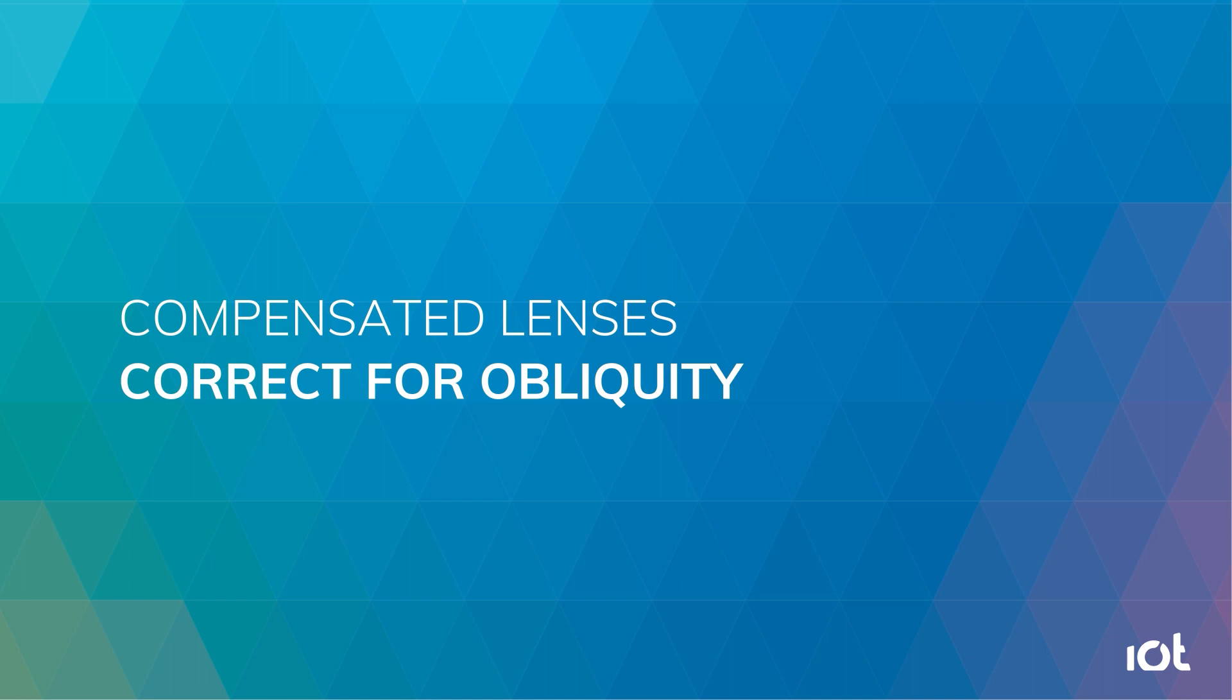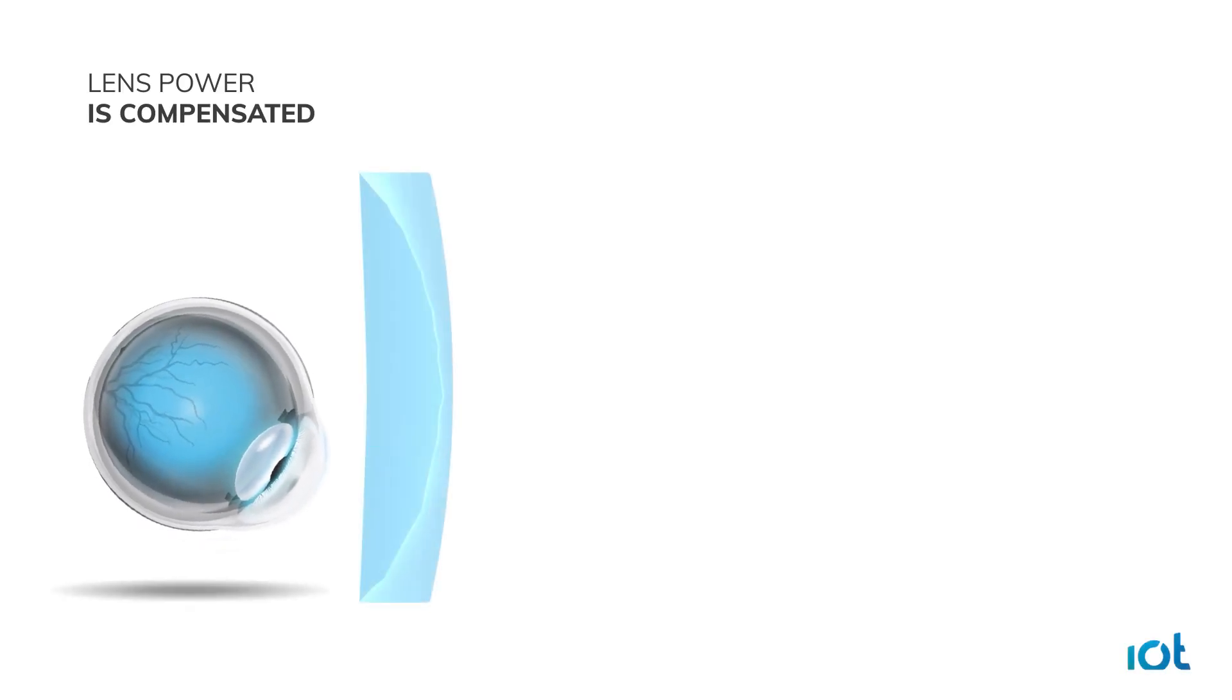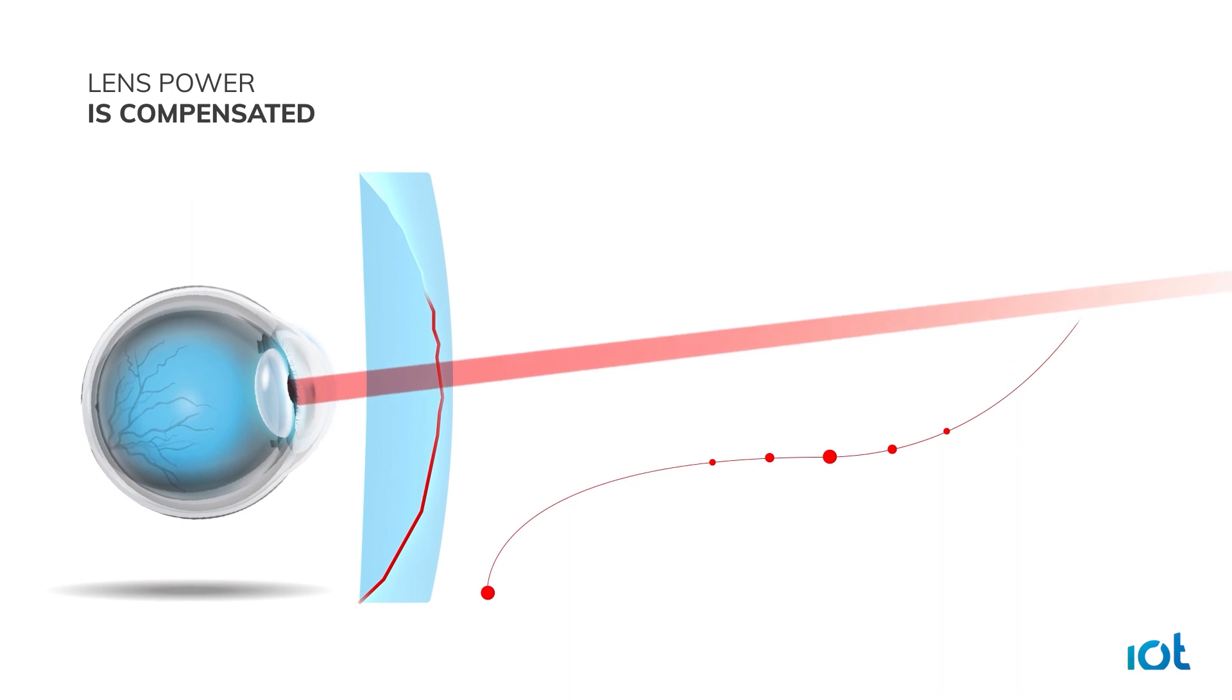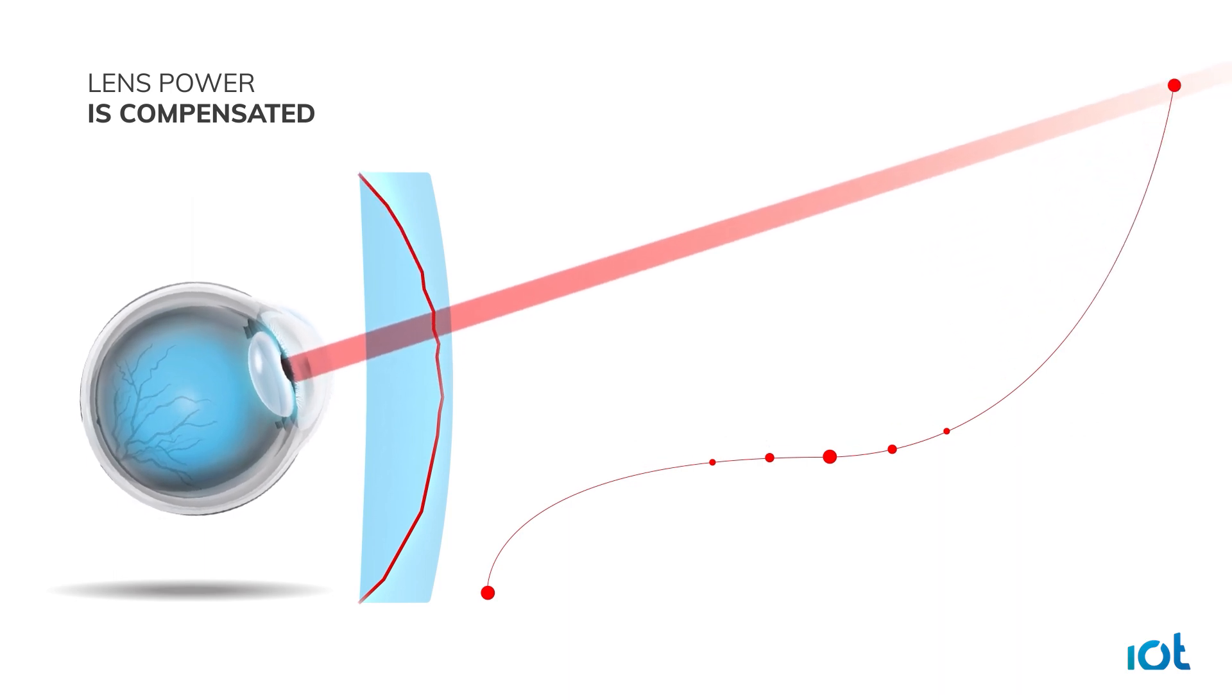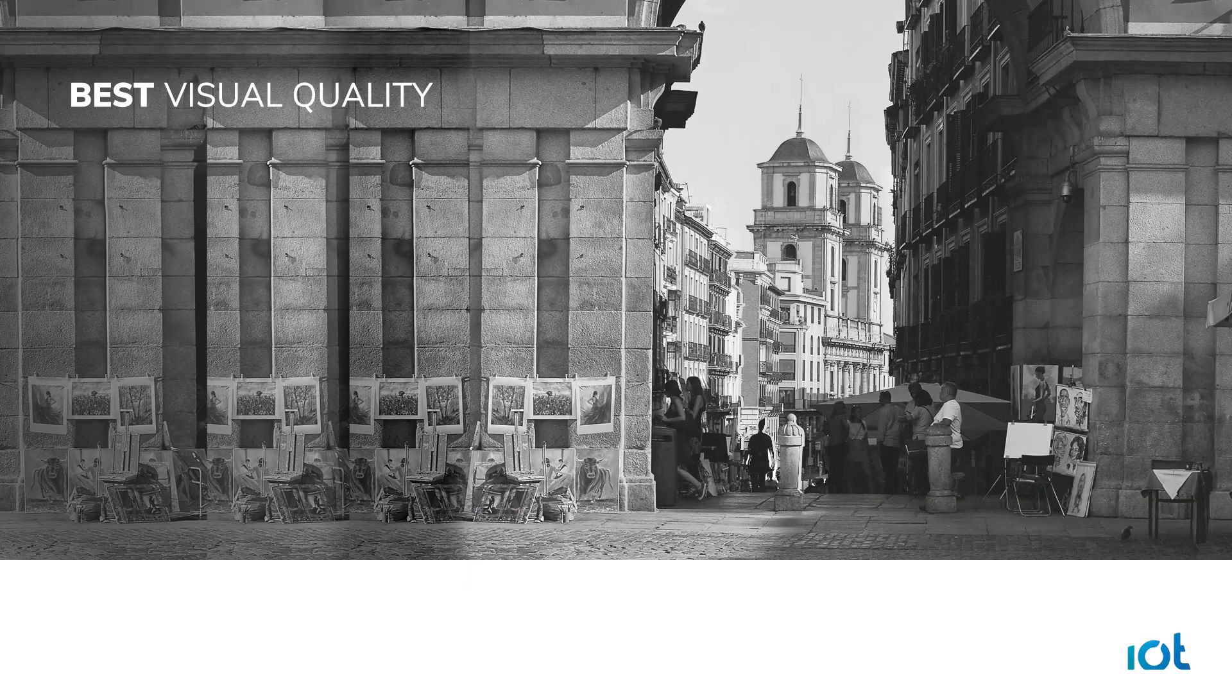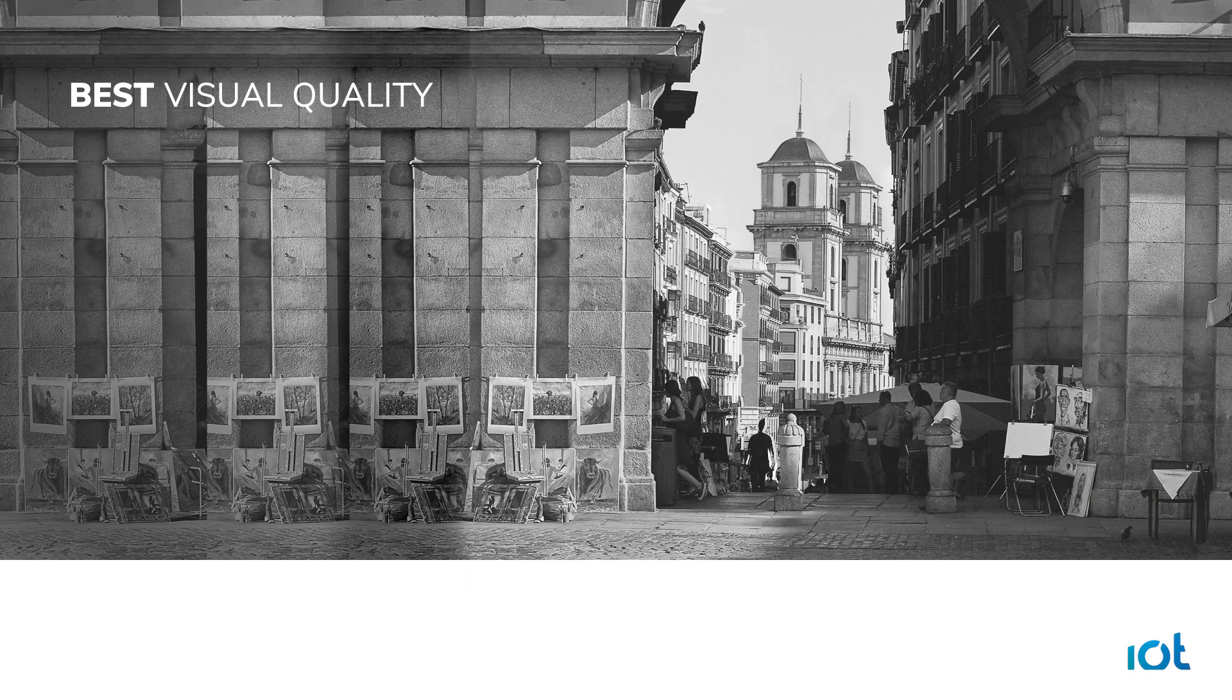Compensated lenses consider the real-life environment and actual lens position in front of the patient's eye. Eye rotation and various viewing distances are simulated. The lens power is modified, or compensated, point by point across the entire surface of the lens. This corrects for oblique aberrations and ensures all light rays focus on the fovea. The patient perceives his prescription through the lens, and the best visual quality is achieved for all distances and gaze directions.